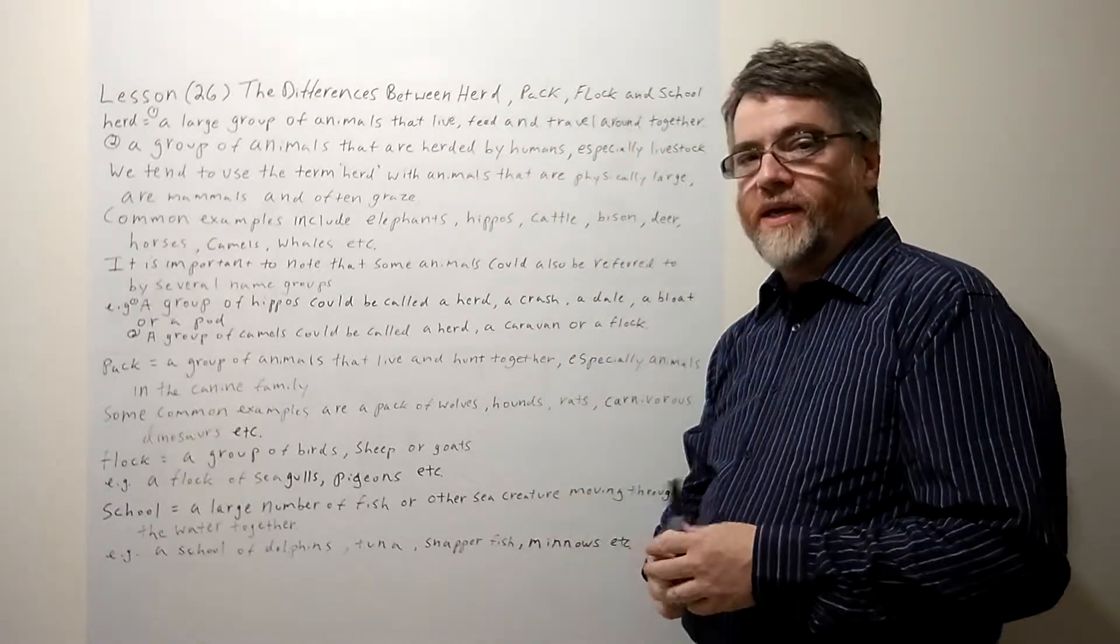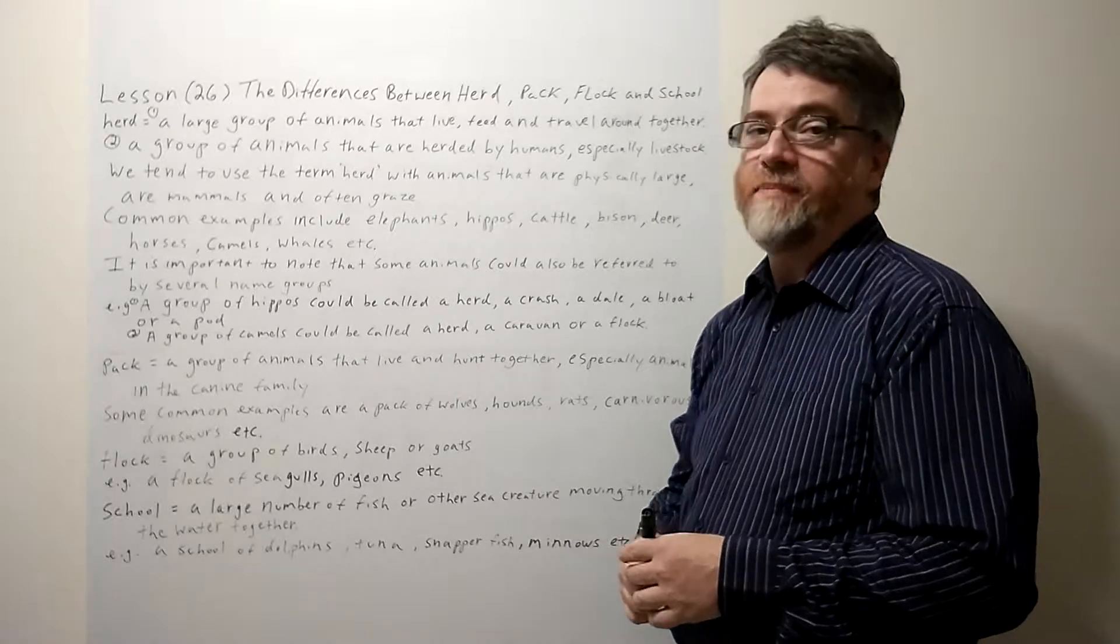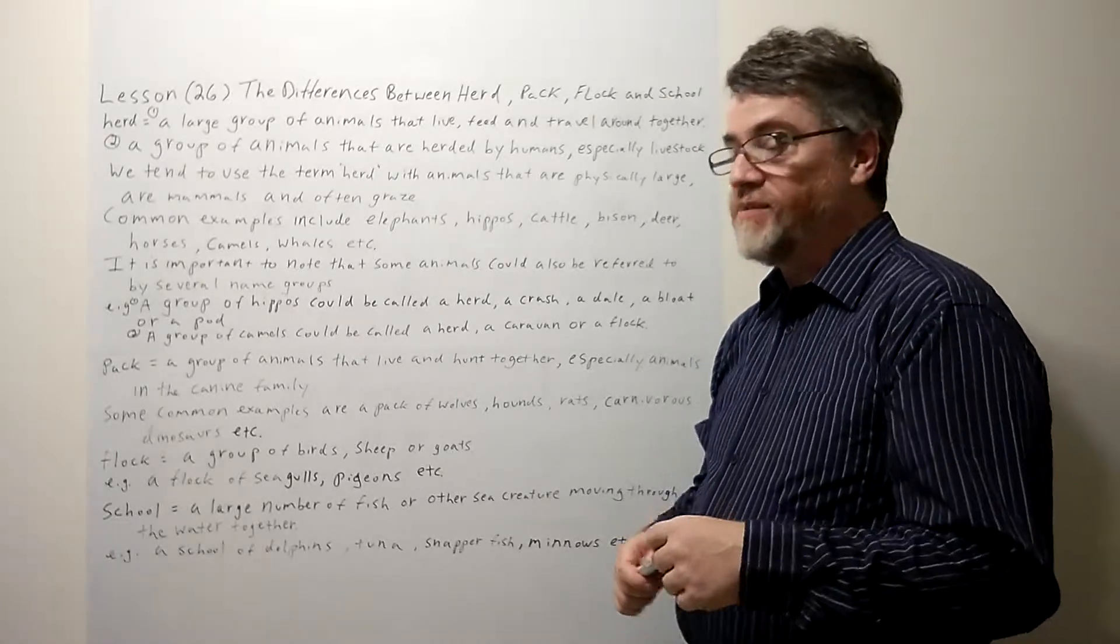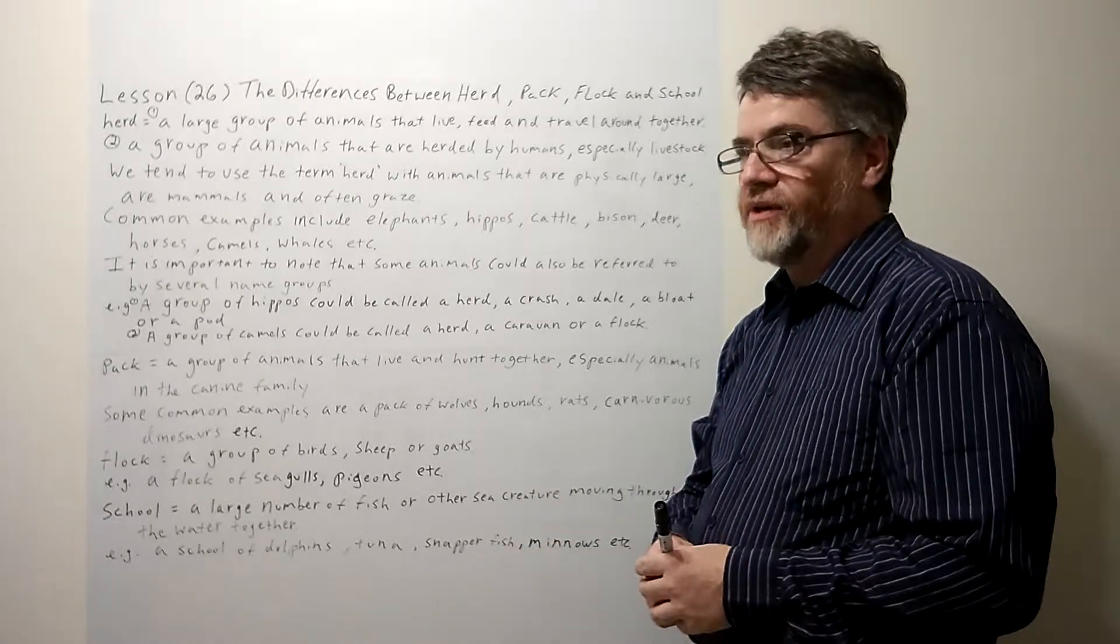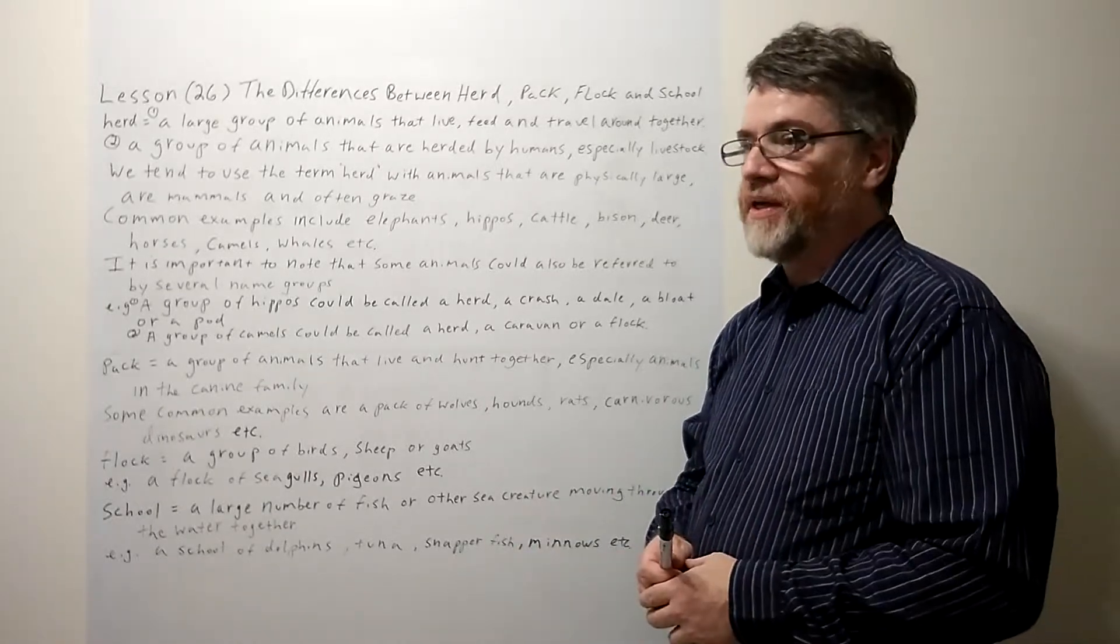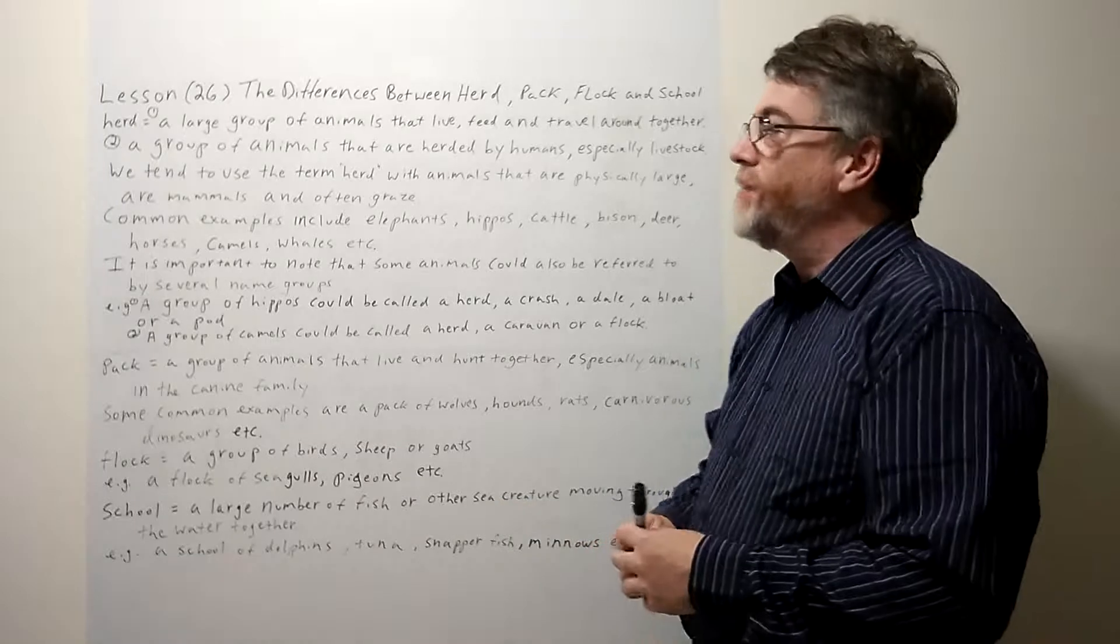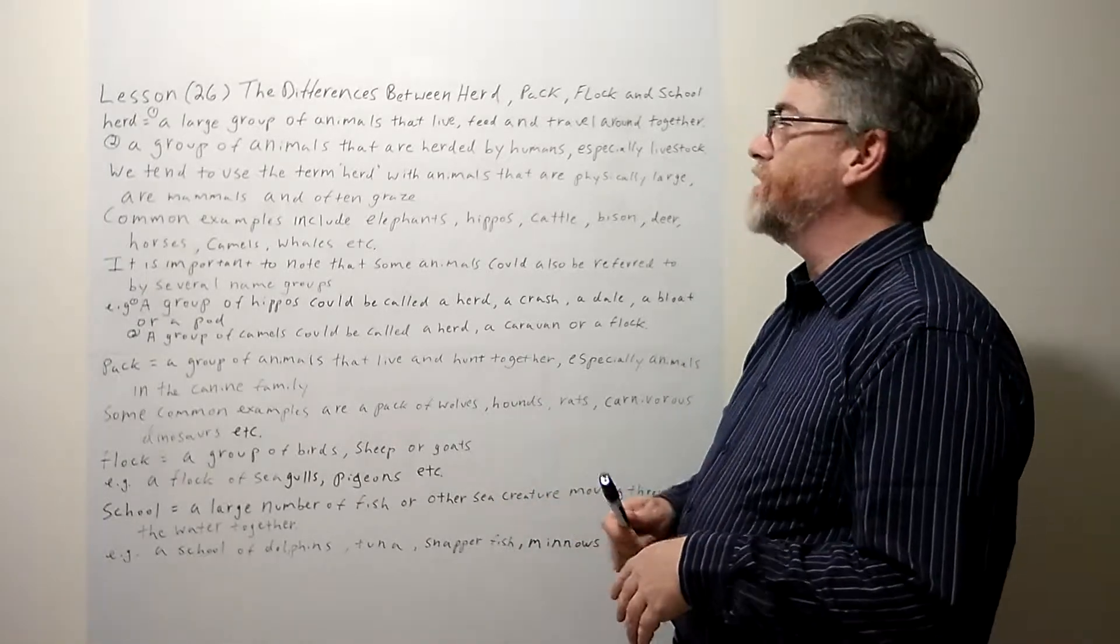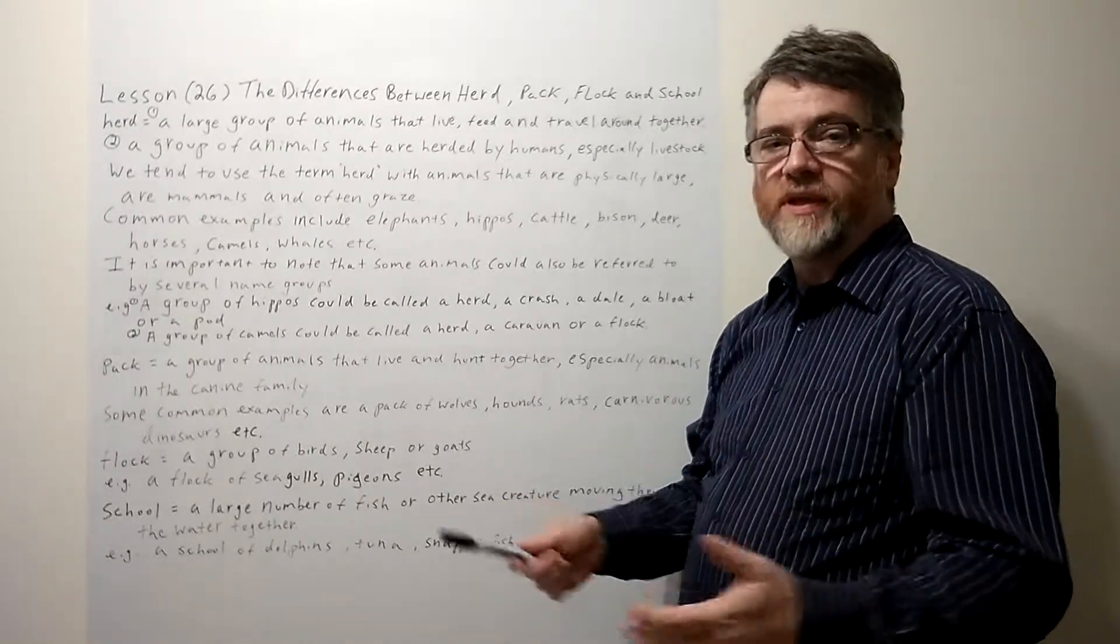Probably the first thing to note is to realize there are many names of animal groups. As I looked into it, I didn't realize there were so many. There's probably more than a hundred, but I'm covering these four because these are the ones we come across probably the most often.